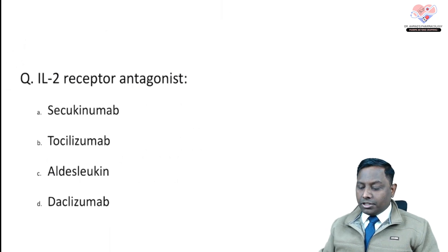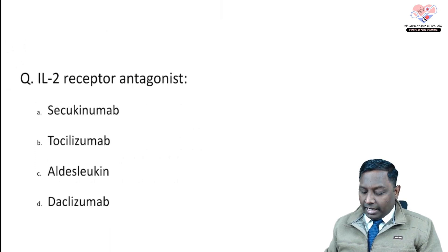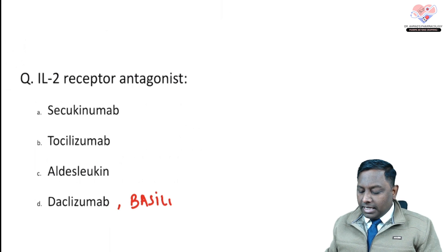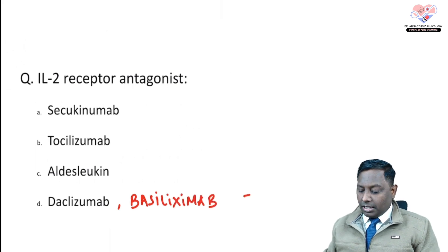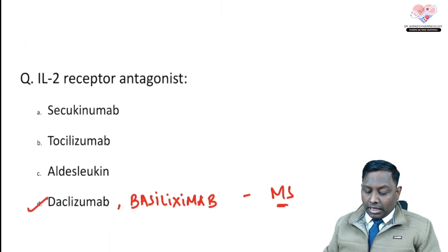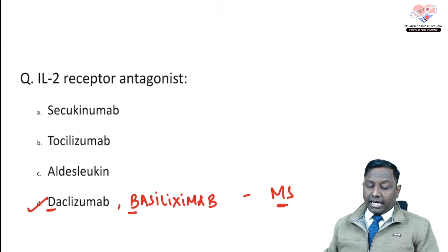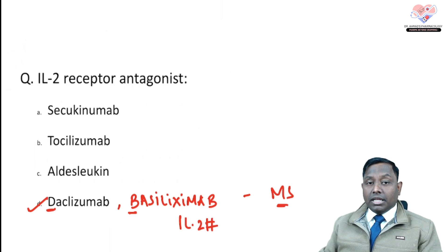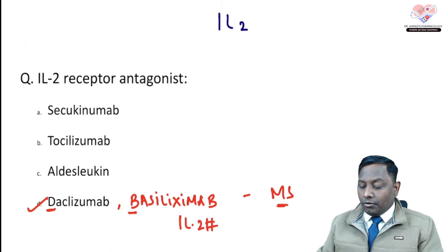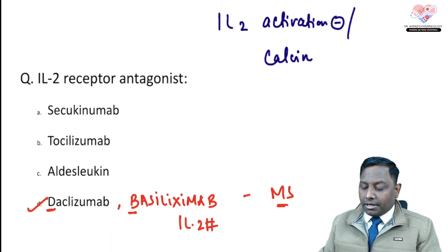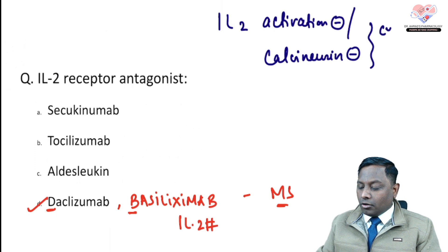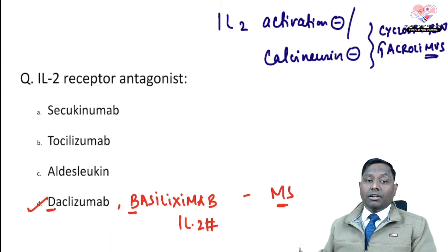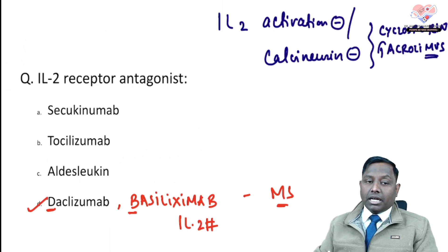The next question is about interleukin-2 receptor antagonists. When they ask specifically for an IL-2 receptor antagonist, remember agents like daclizumab and basiliximab, which can be utilized in multiple sclerosis. Note: if the term changes to 'interleukin-2 activation inhibitor,' that is the same as saying calcineurin inhibitor. Calcineurin inhibitors include cyclosporine and tacrolimus — these inhibit IL-2 activation, making them different from IL-2 receptor antagonists.